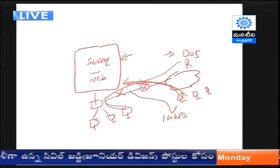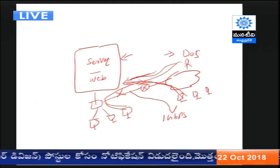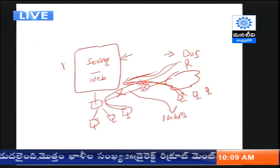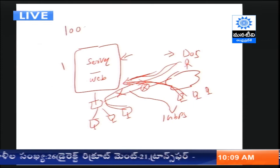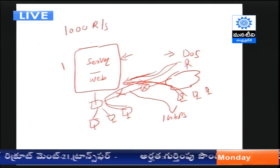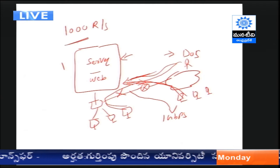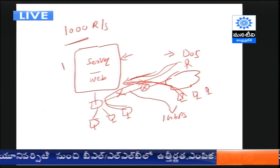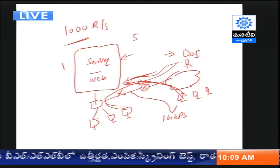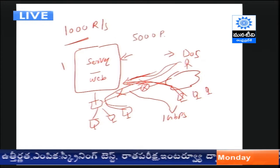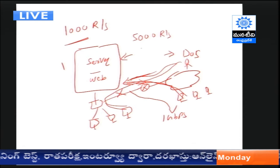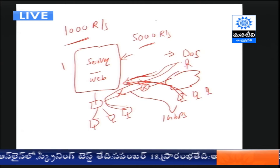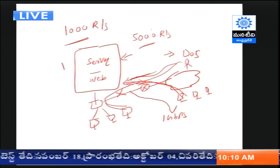In a DDoS attack, the hacker sends too many requests to the server. Say my server is designed to process 1,000 requests per second - as long as I receive 1,000 requests, there is no problem. But if the hacker sends 5,000 requests per second, my server will not be able to accept and process them, and it would crash. That is what we call a Denial of Service or DDoS attack.